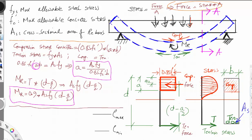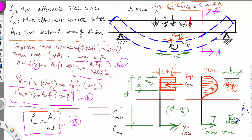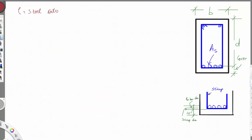The steel ratio is called rho (ρ), a Greek symbol. It equals the area of steel divided by B times D. This is Equation 3. The steel ratio is limited according to the code, and there are tables giving the minimum and maximum values.